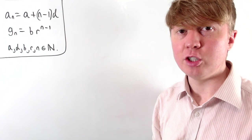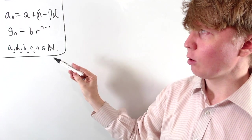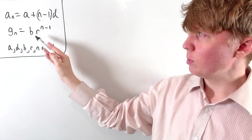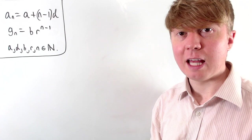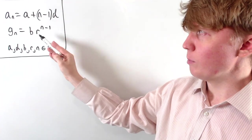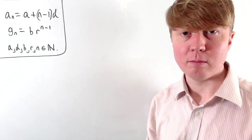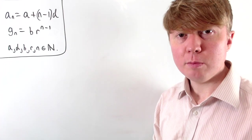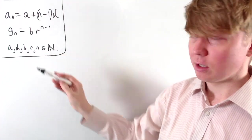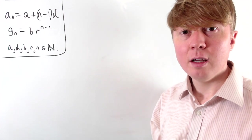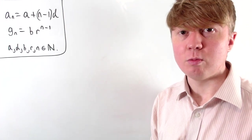We've got a similar formula for geometric sequences. You start with some value b, then multiply by a common ratio r to get to the next term. To get to the nth term, you'd need to multiply by r n minus one times. Because we're going to be working with subsequences, we impose that a, d, b, and r all have to be positive integers so that our subsequence is well defined.